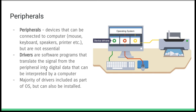The first role of an OS is managing peripherals — devices that can be connected to a computer but are not essential, such as a mouse, keyboard, speakers, and printer. The OS provides drivers: software programs that translate the signal from a peripheral into digital data that can be interpreted by the computer. The majority of drivers are included as part of the OS, though they can also be installed separately, which is less common nowadays.